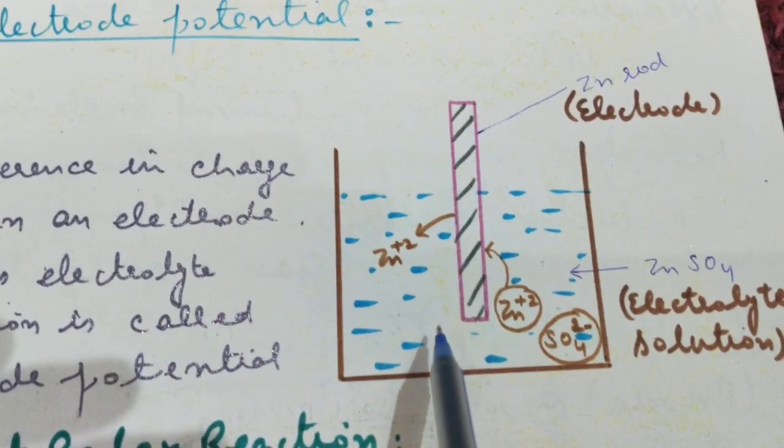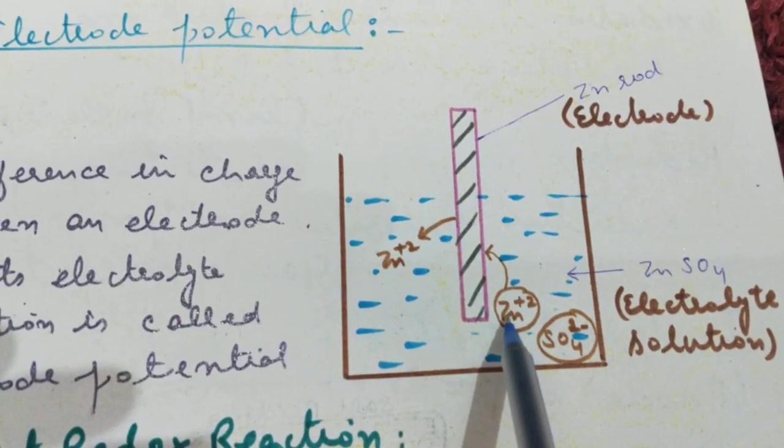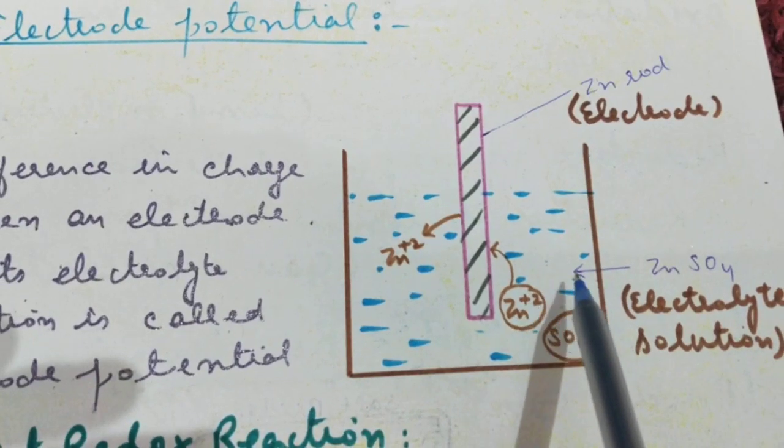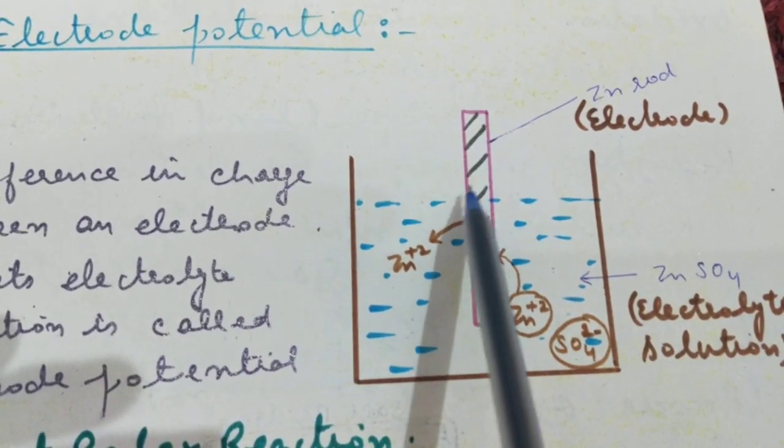Now in the solution, the number of Zn+2 ions are equal to the number of SO4 2- ions. It means the solution is neutral with respect to this rod.